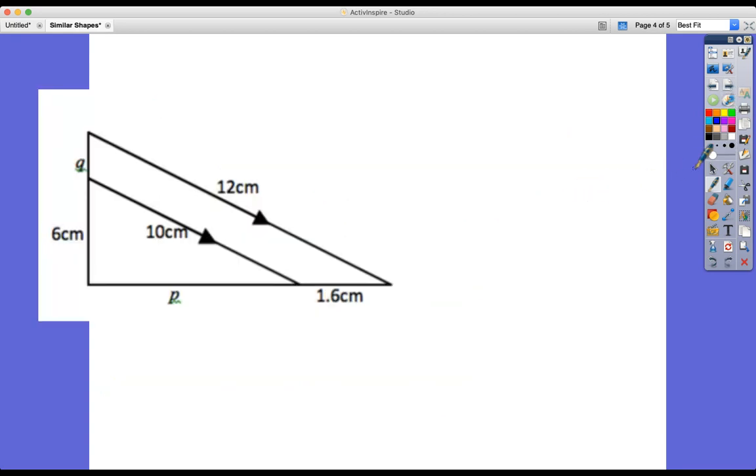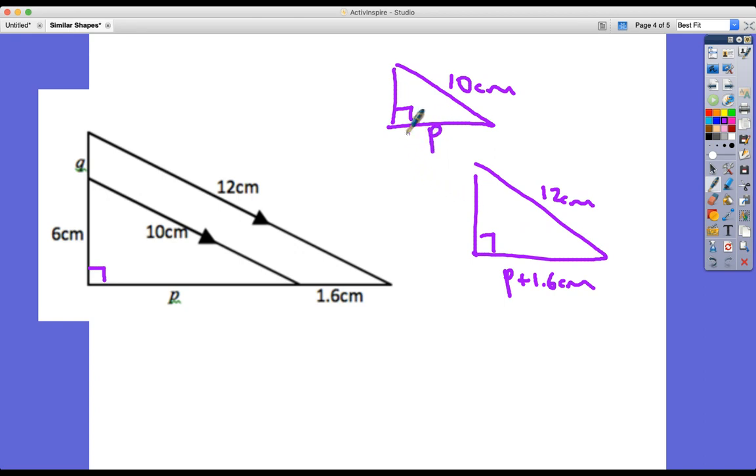Now in this example, it's very similar to the last one actually. We've got a right angle and we've got a small right angle triangle, and we've got a large right angle triangle that the small one is lying on top of. A very similar question actually. Let's pull out those two triangles. Always a good step so that we can see exactly what we're dealing with. So we've got 12 centimetres, we've got 10 centimetres, we've got P plus 1.6 centimetres, and we've got P and we've got six centimetres and we've got six plus Q centimetres. So the first step is to find the scale factor.